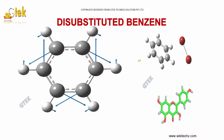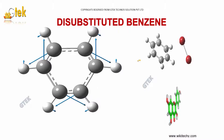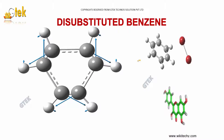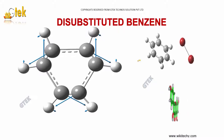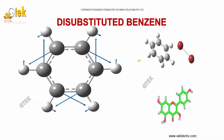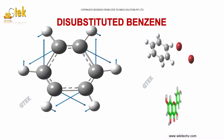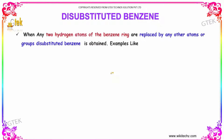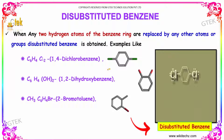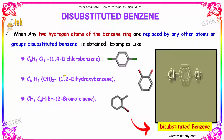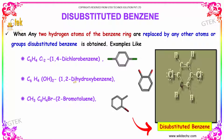Welcome to GTEC Technos Solutions Pvt Ltd. In this unit, we will be studying about Disubstituted Benzenes. When any two hydrogen atoms of the benzene ring are replaced by other groups, it is known as disubstituted benzene.